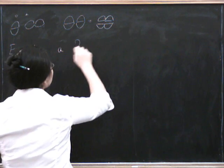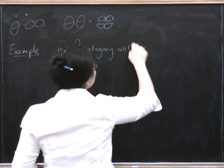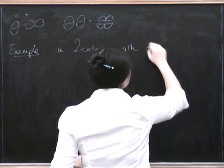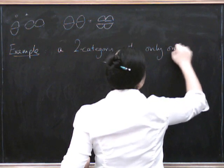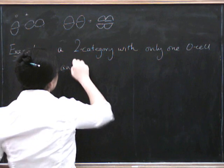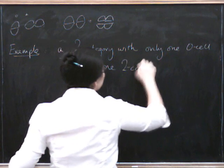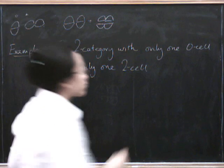Here's an example of an Eckman-Hilton argument. A 2-category with only one 0-cell and only one 2-cell is in fact a commutative monoid.